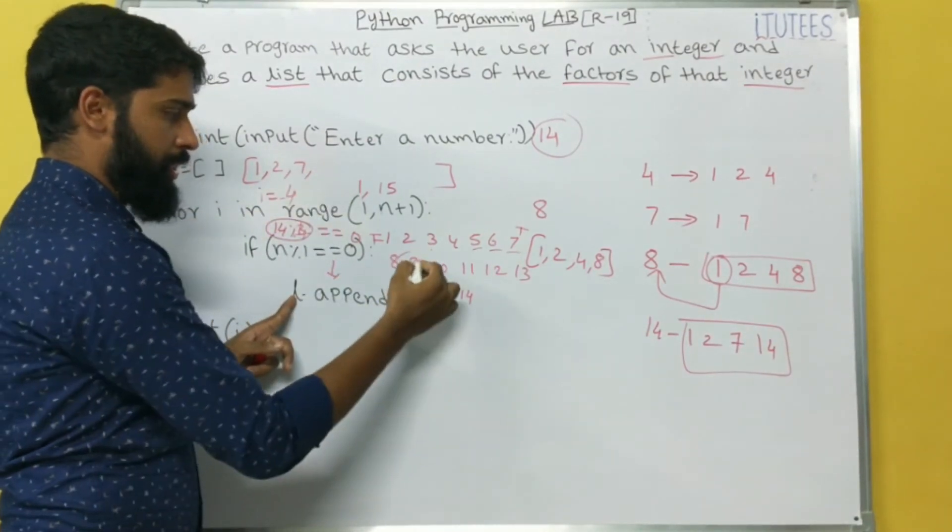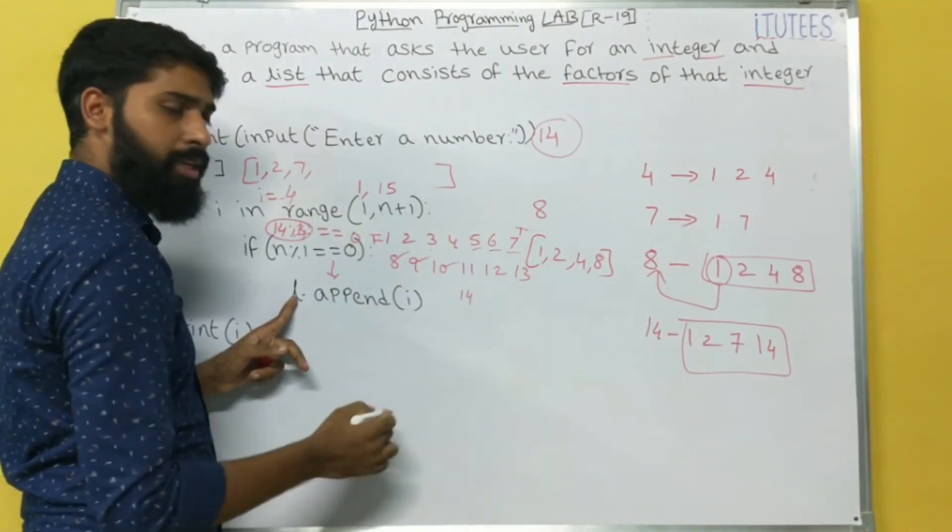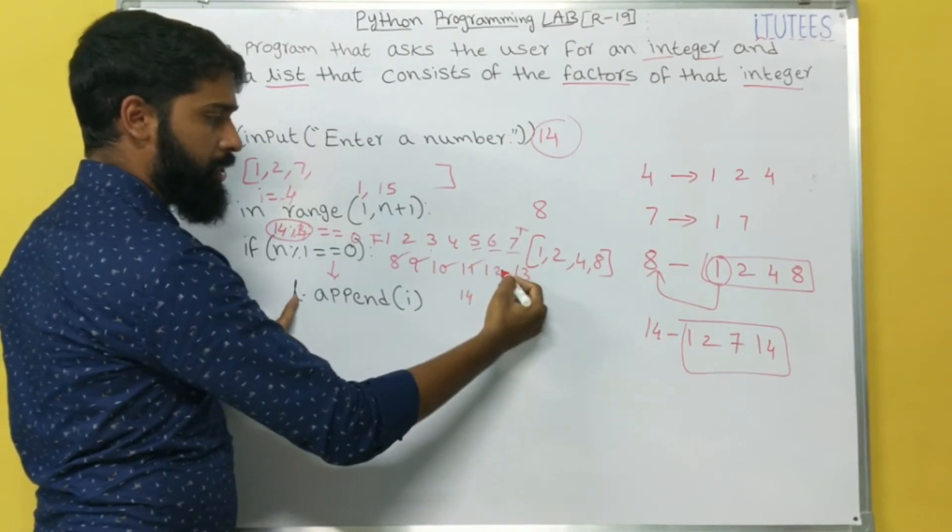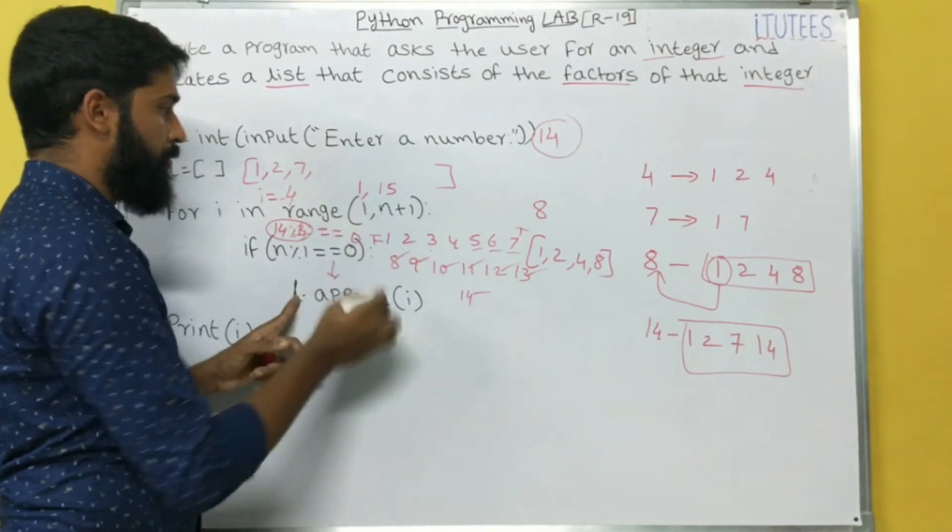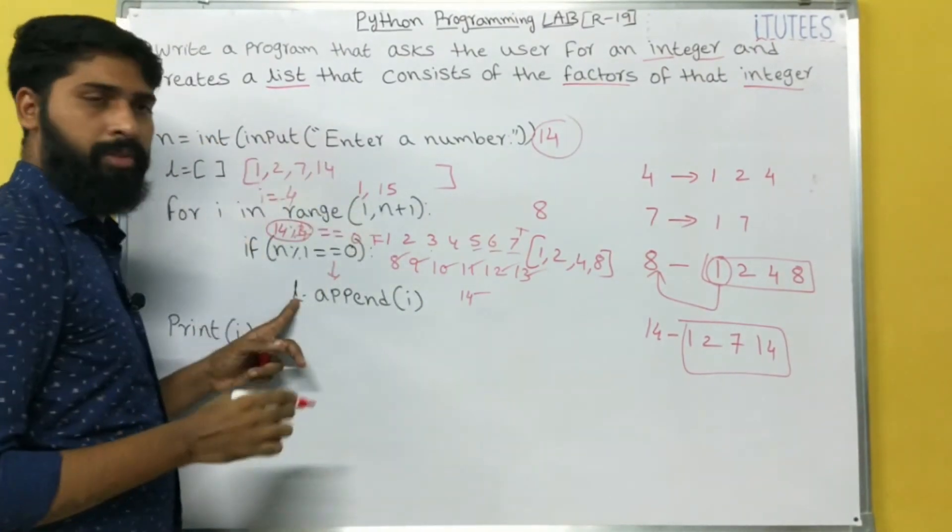For 8, false. 9, false. 10, false. 11, false. 12, false. 13, false. 14, true. So 14 is appended here. Okay.